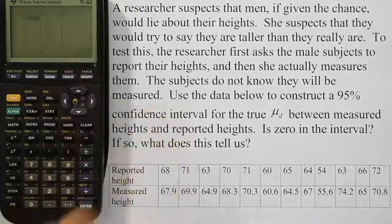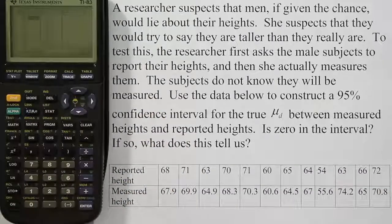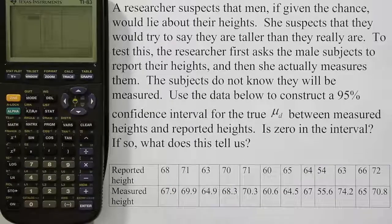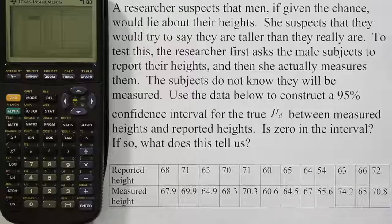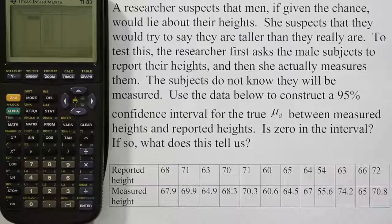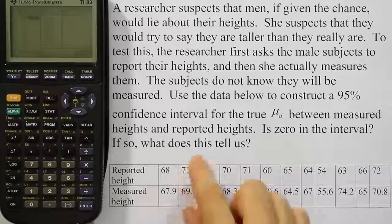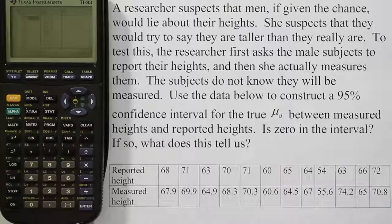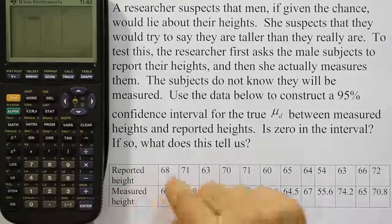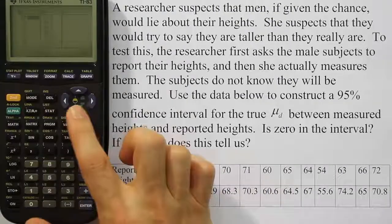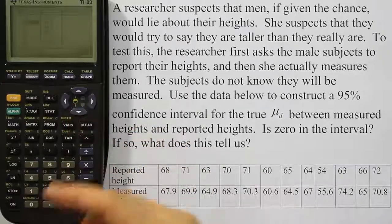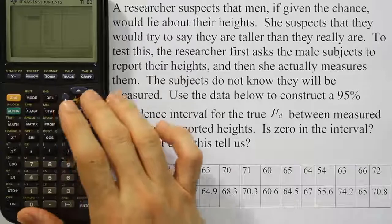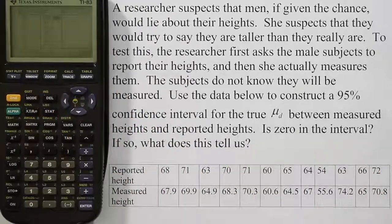In list one and two, you see I already have data and what I've actually already done is I went in and I typed all this data inside the list for us already to save us some time. If you want to see how that's done in an actual problem, you can look at the video for the matched paired t-test. I did that already for that video and you can see me type in all the data. Of course, it's very easy. You would just type in, say, 68, and then hit ENTER and it goes into that spot and then so on and so forth. So L1 and L2 are already filled up, with reported heights and measured heights in L2.